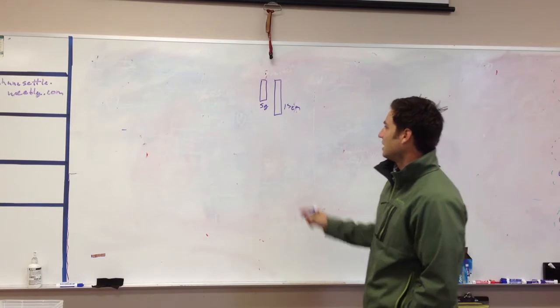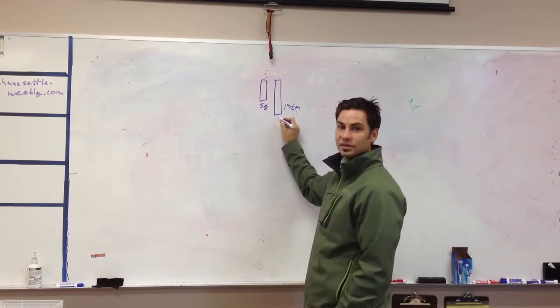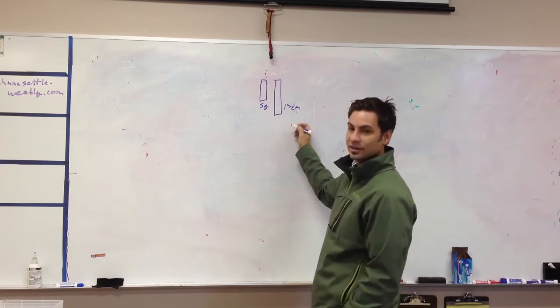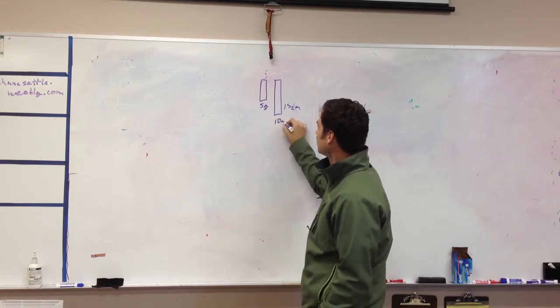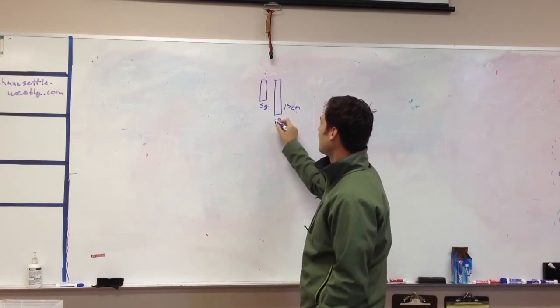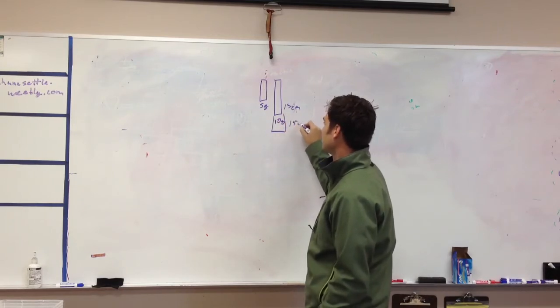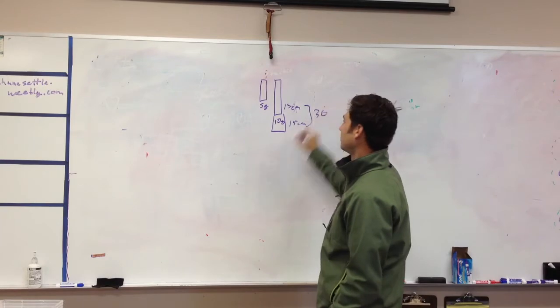And then let's say, now remember there's 5 grams on here. So you just added 5 grams. Now let's say you add 10 grams. Now the rubber band will stretch an additional 15 centimeters for a total of 30 centimeters.